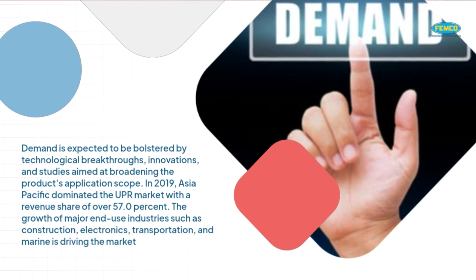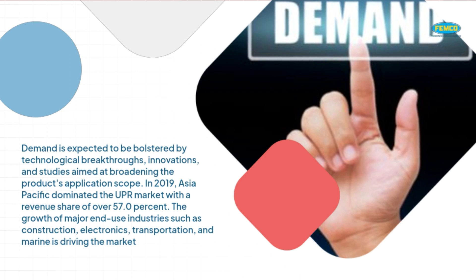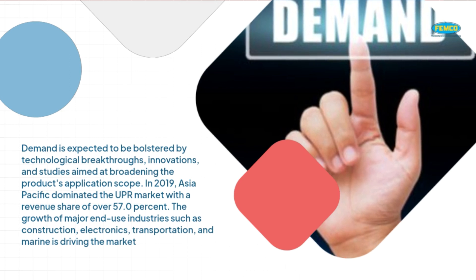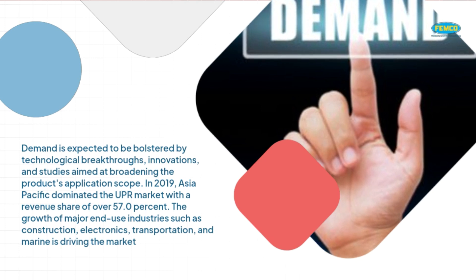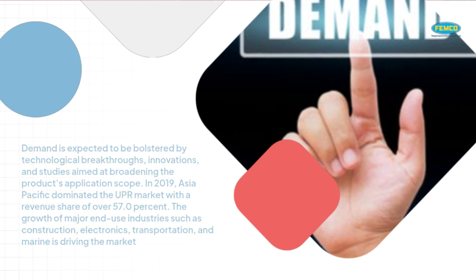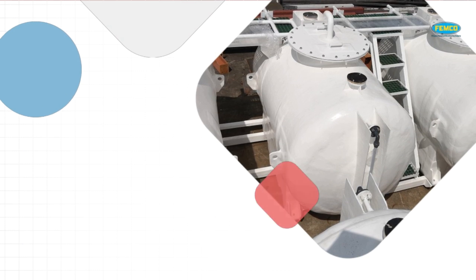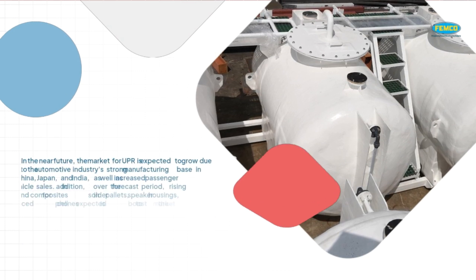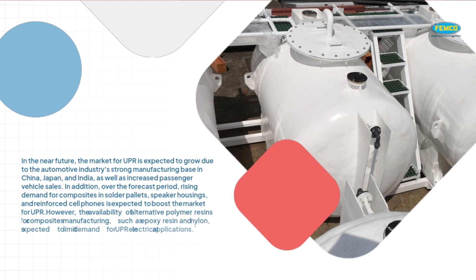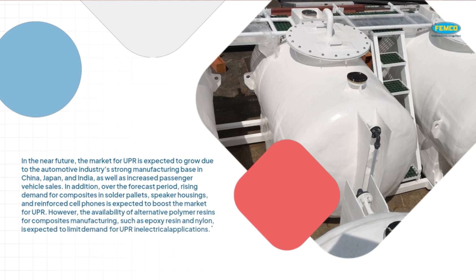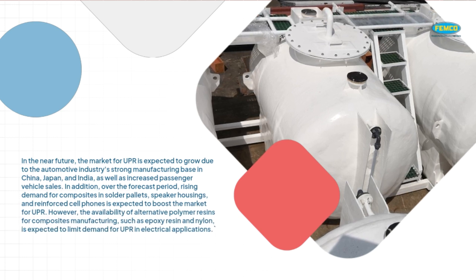In 2019, Asia-Pacific dominated the UPR market with a revenue share of over 57.0%. The growth of major end-use industries such as construction, electronics, transportation, and marine is driving the market. In the near future, the market for UPR is expected to grow due to the automotive industry's strong manufacturing base in China, Japan, and India, as well as increased passenger vehicle sales.